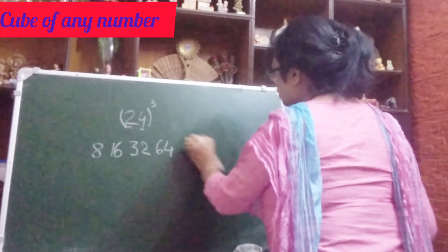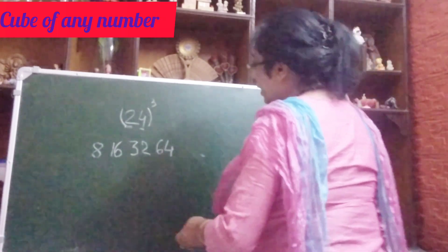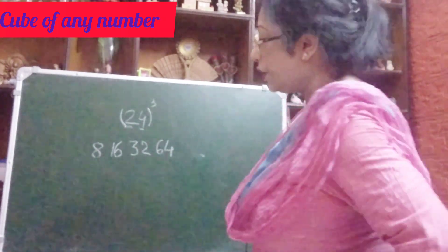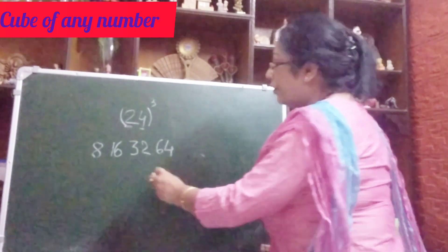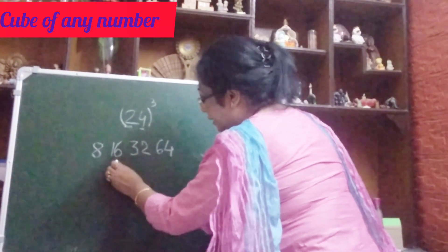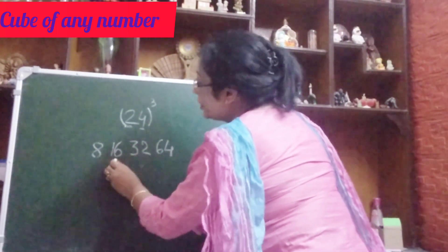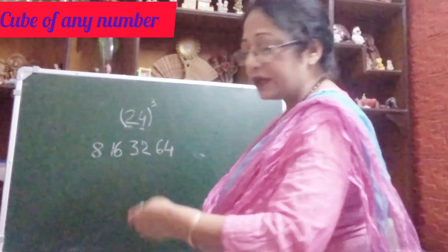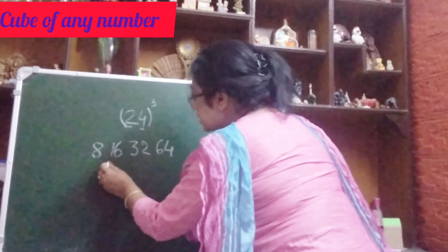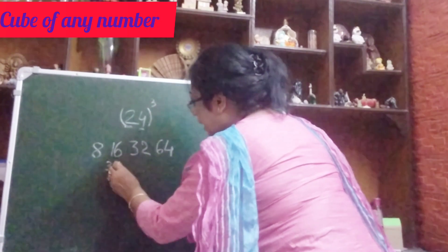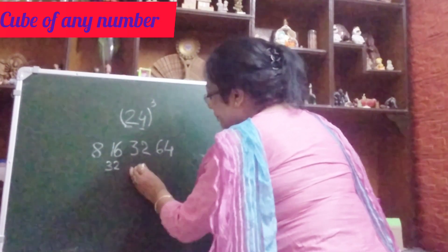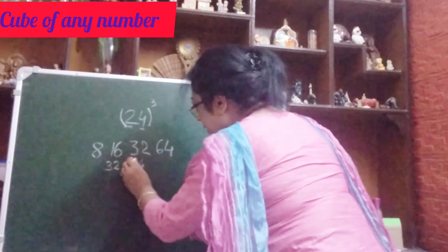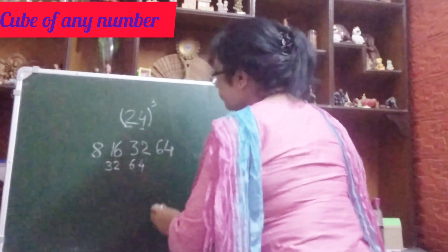This thing you will do orally. Now what is the second step? In the second step what you will do — you will make this number double, means multiply by 2. So double of 16 is 32, write here 32. Double of 32 is 64, that is 64.